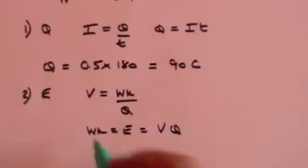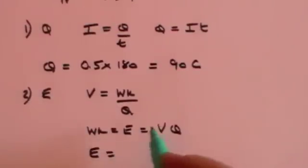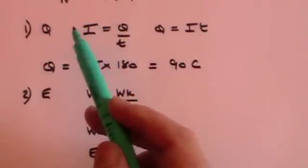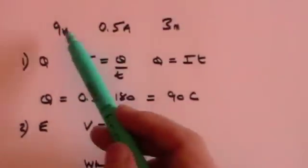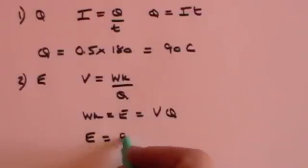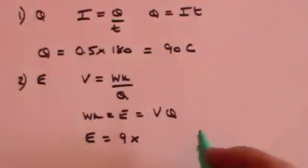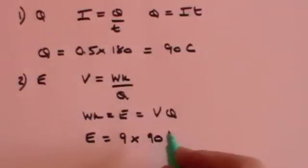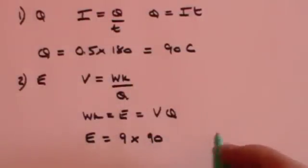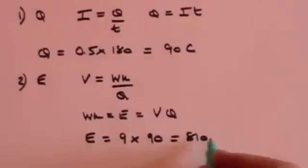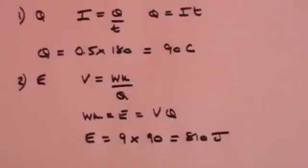And that means that the energy is equal to the voltage, well I told you what that was, that is a 9 volt battery is driving the razor so it's 9 times the charge which we just worked out was 90 coulombs when we run the razor for 3 minutes and that's going to be 810 and energy is measured in joules so we're using 810 joules of energy when we use that razor for 3 minutes.